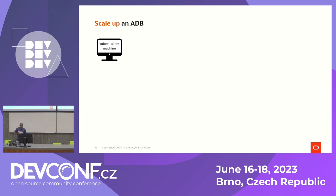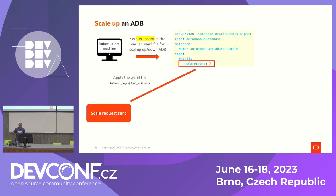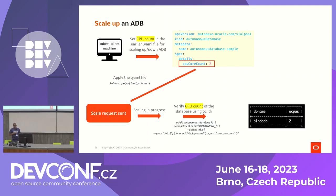Scaling up follows the same steps — you just increase the OCPU count. In this example, we go from one to two. Apply again and it scales. There's a way to query and confirm it's available. For credentials and sensitive values, use your vault of choice and you're good to go.